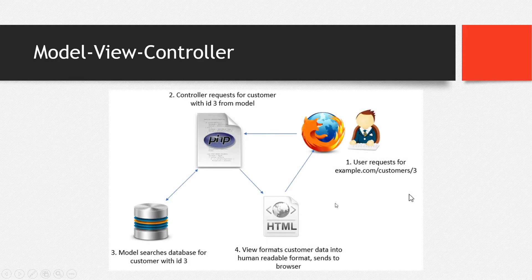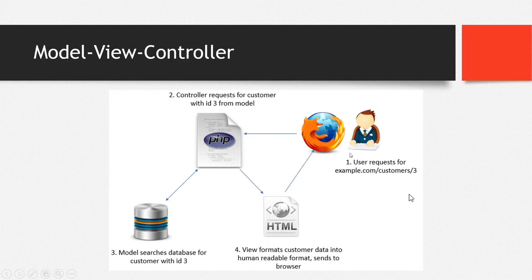Here is a graphical example of Model View Controller. The process always starts with the user. The user tries to access a specific website — for example, a URL like example.com/customers/3, where 3 is the ID of the customer. Once that happens, the request goes to the controller side, which then requests the customer with ID 3 from the model.